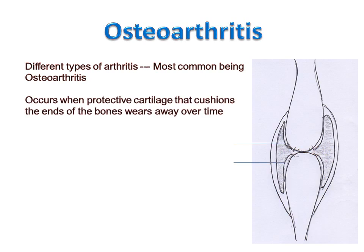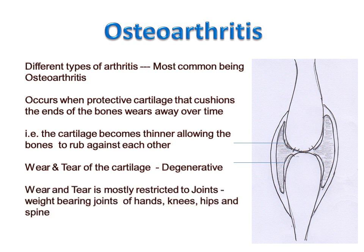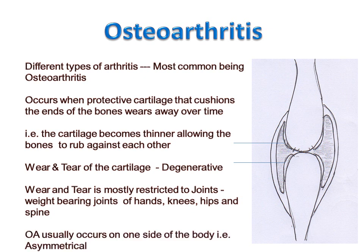Osteoarthritis occurs when the protective cartilage that cushions the ends of the bones wears away over time — that is, the cartilage becomes thinner, allowing the bones to rub against each other. As osteoarthritis is due to wear and tear of the cartilage, we say osteoarthritis is degenerative in most cases. Wear and tear is mostly restricted to the joints. Osteoarthritis can damage any joint, but the most commonly affected are those joints used most in everyday life — the weight-bearing joints of the hands, knees, hips, and spine. Osteoarthritis usually occurs on one side of the body, that is, asymmetrically — it can occur in one hand, one knee, or one hip.